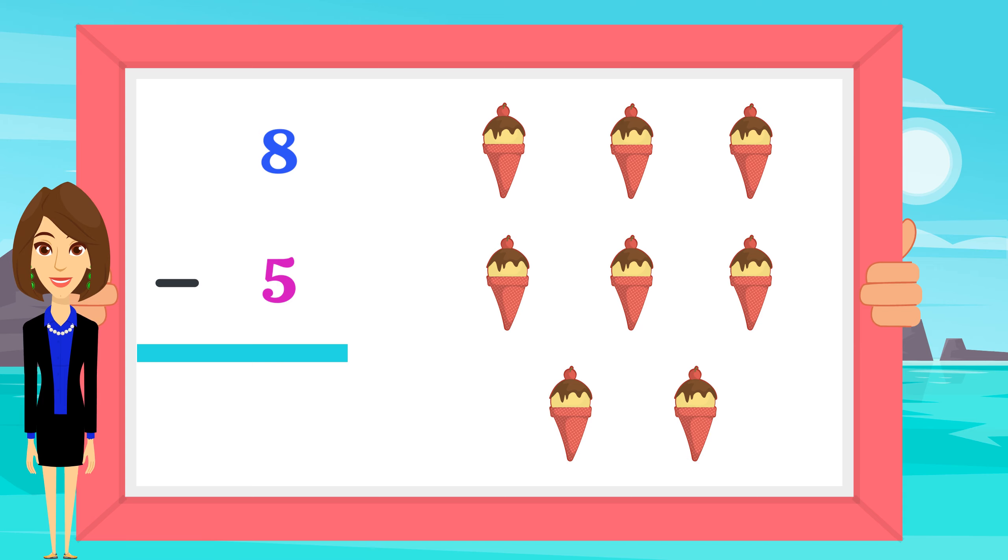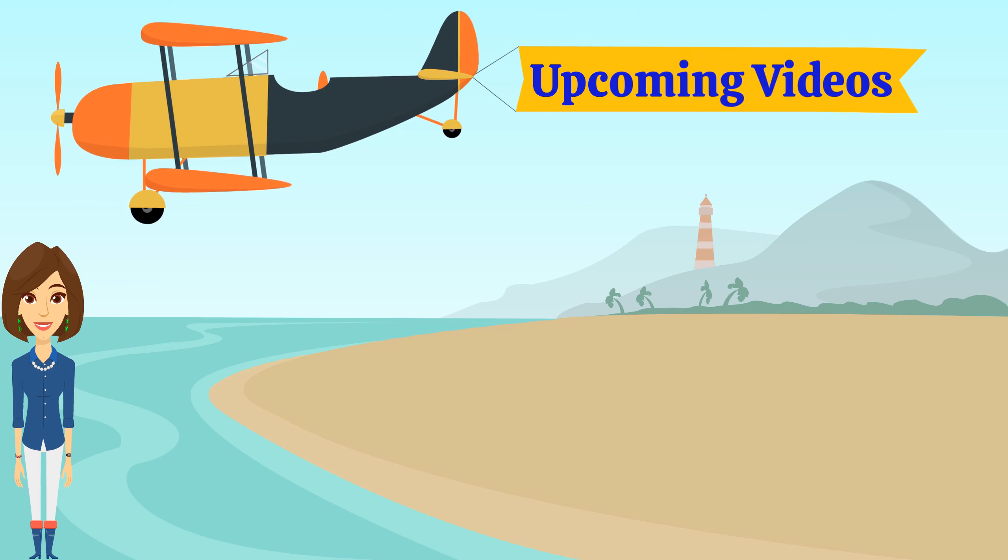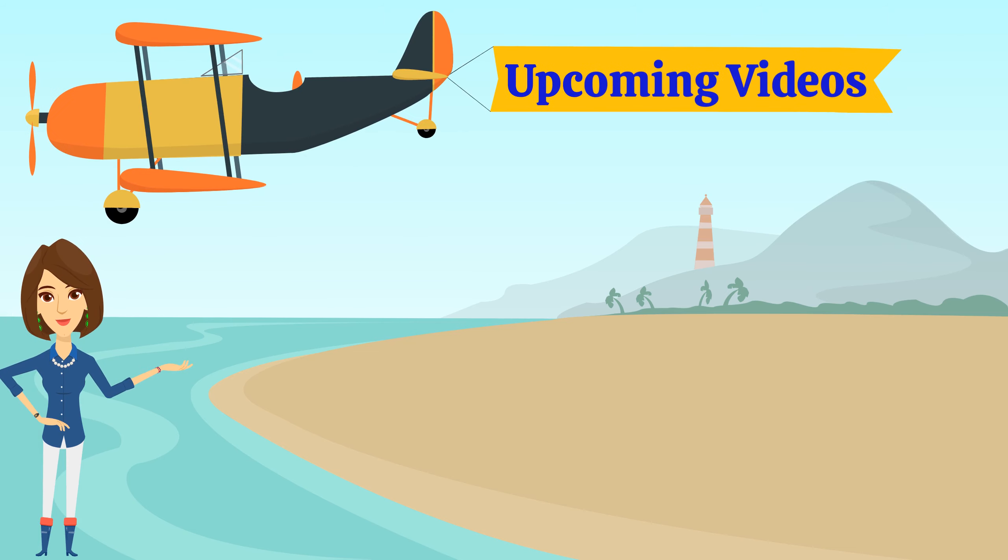Taking away five from eight will give you three, so eight minus five is three. Thanks for watching. Please subscribe to Kiddo Kitta. Stay tuned for more videos.